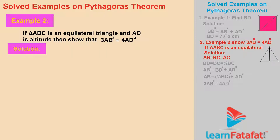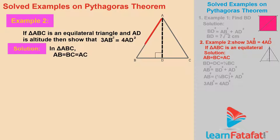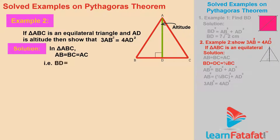Solution. In triangle ABC, AB = BC = AC. The altitude in an equilateral triangle divides the opposite side into equal segments, i.e., BD = DC = (1/2) × BC. This is equation 1.